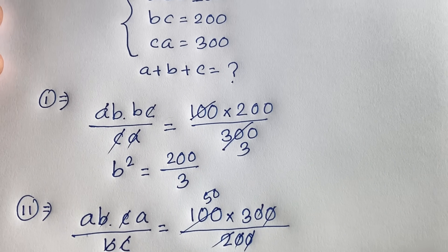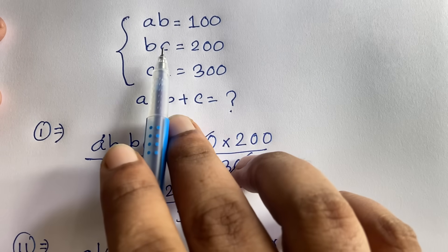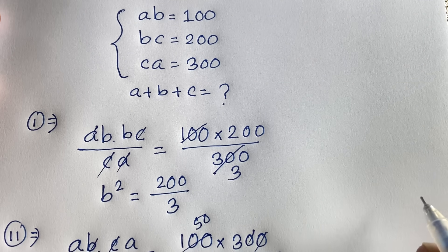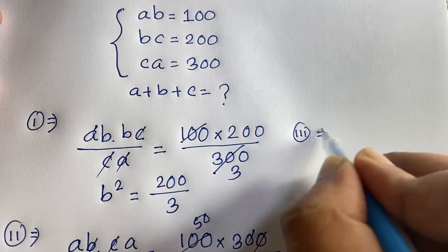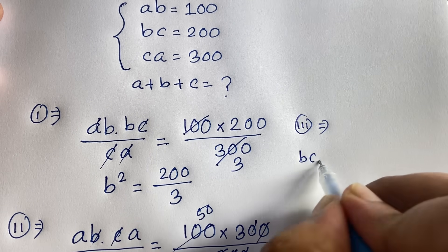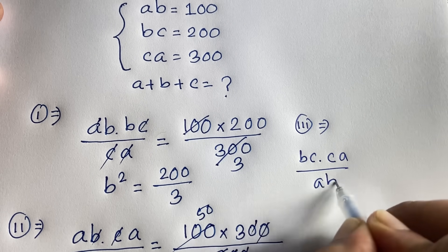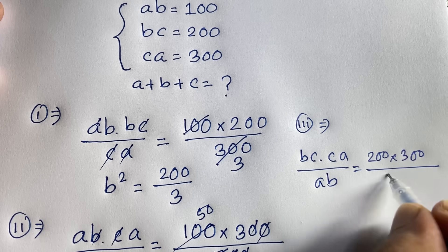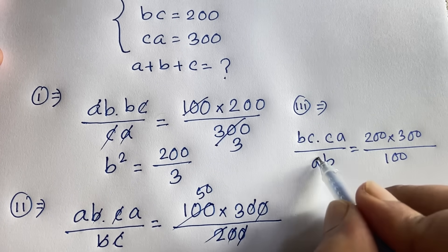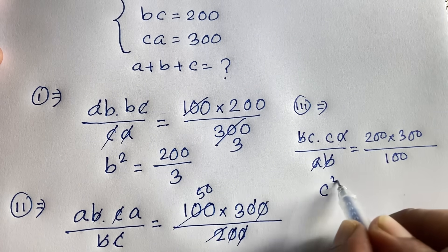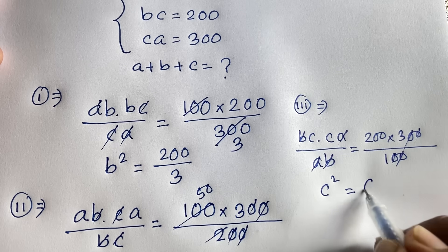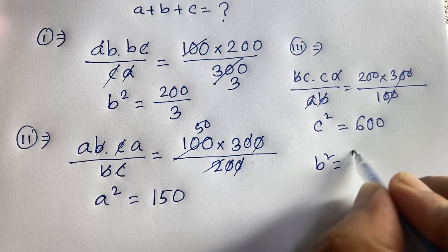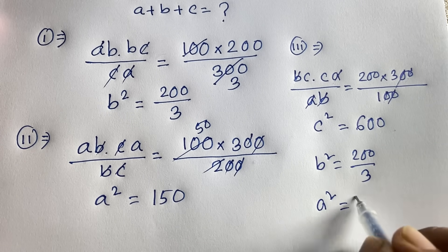Again, step 3: I multiply the second equation and third equation, and divide by the first equation. So the second equation is 200 times the third equation is 300, divided by the first equation which is 100. A cancels and B cancels, and we find out here is C squared is equal to 600.